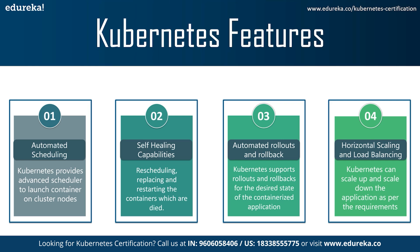Third, automated rollouts and rollbacks: Kubernetes rolls out changes to the application or its configuration while monitoring application health to ensure it does not kill all instances at the same time. If something goes wrong, Kubernetes can use a rollback to revert the change. Fourth, horizontal scaling and load balancing: Kubernetes can scale the application up and down as per requirements with a simple command, via UI, or automatically based on CPU usage.